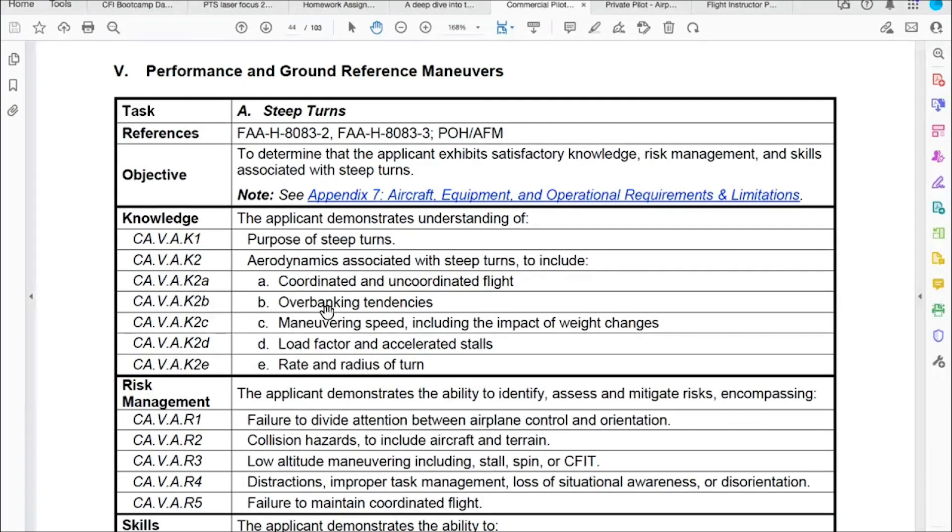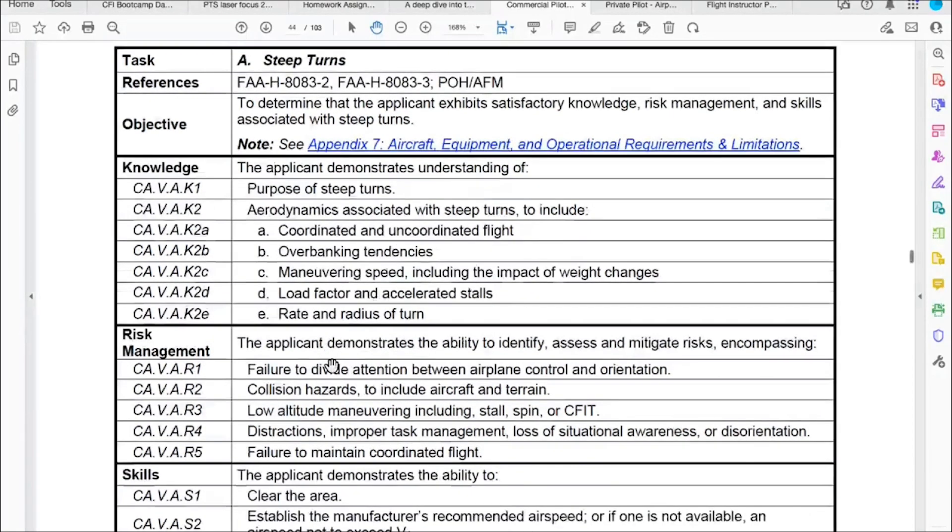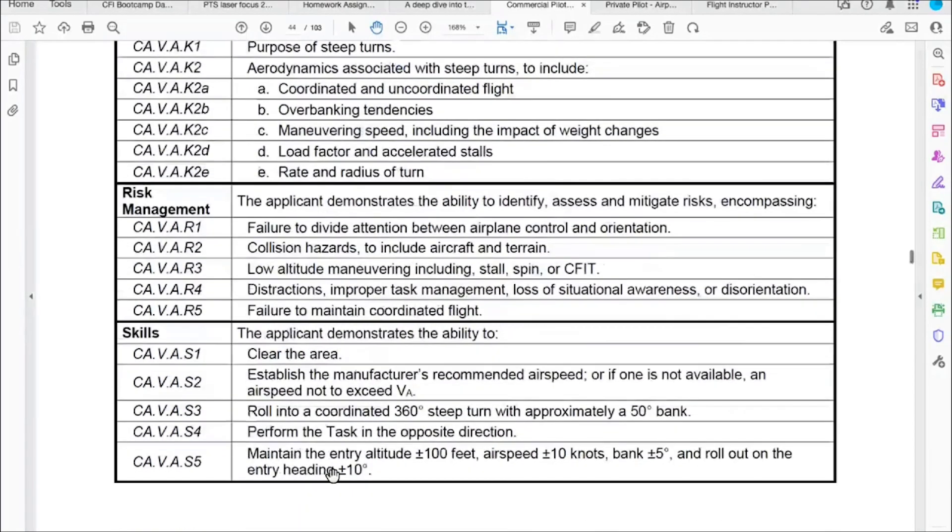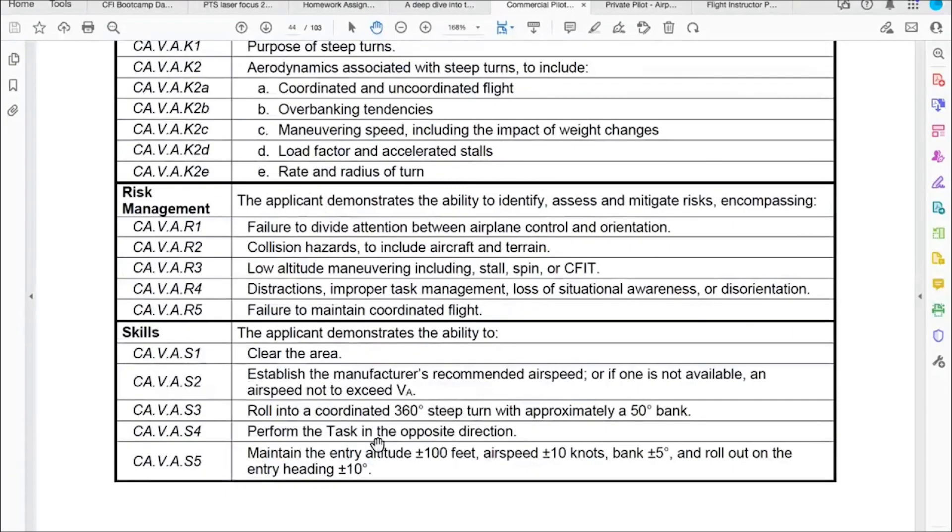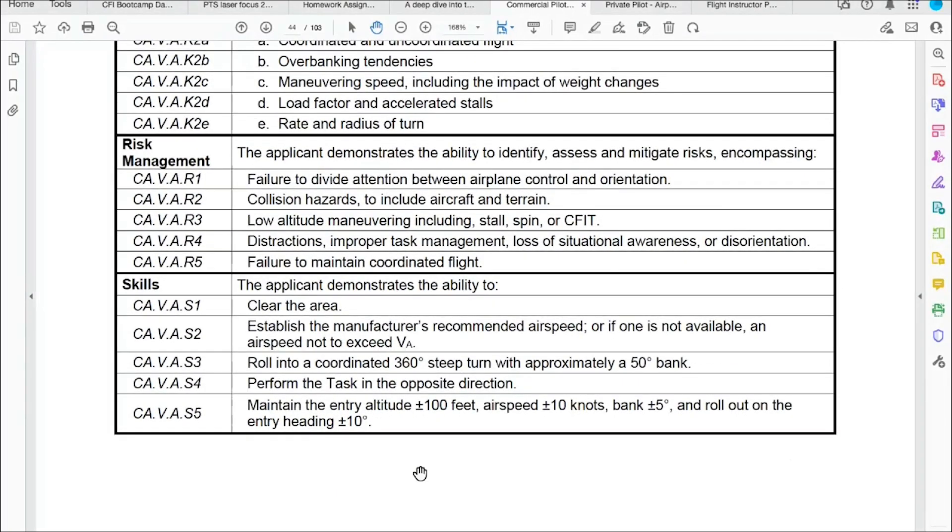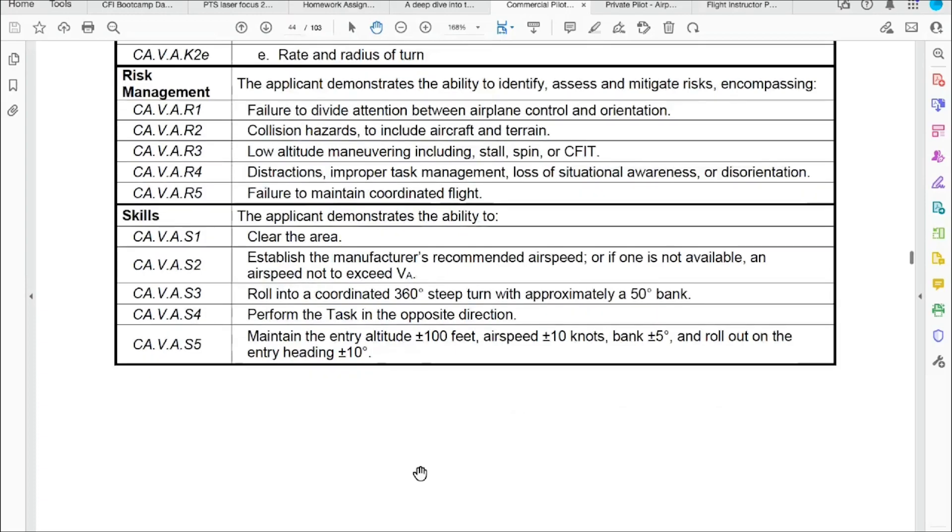This is Task A, steep turns. Now you see there's knowledge nuggets here, there's risk management, and there's the metrics right here. So this you'll be tested to. But your instructional knowledge—the PTS says you have to have instructional knowledge. And Task B is steep spiral.